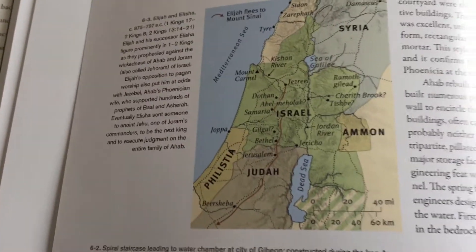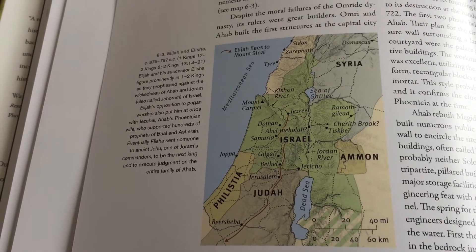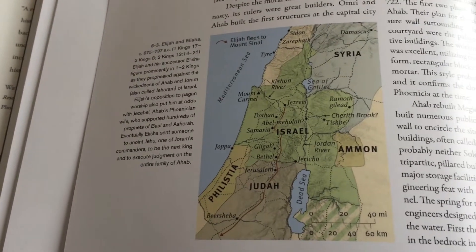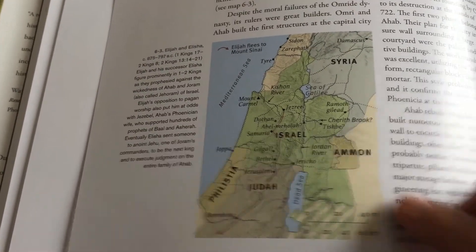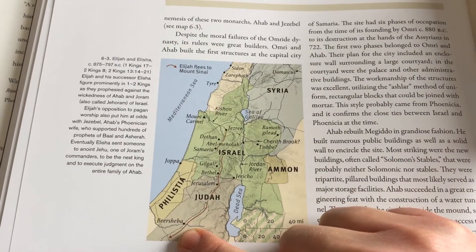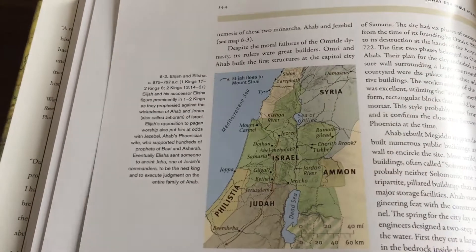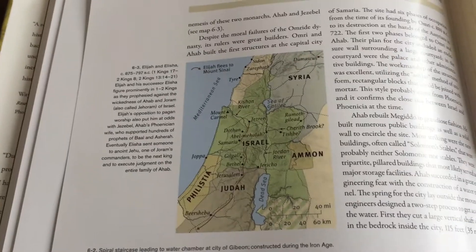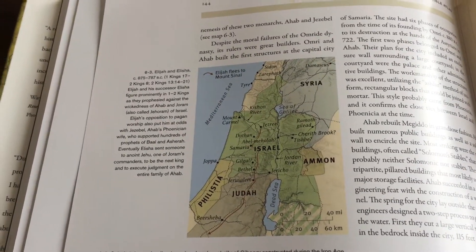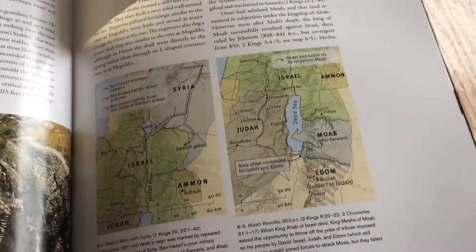For example, we have this map here which shows us what Israel looked like in the time of Elijah and Elisha. You can even see where Elijah fled from Jezreel down to the wilderness, and you can see different towns that were around at that time.